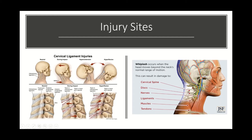Here on the picture on the right, it lists off everything that can be damaged in a whiplash injury. We have the cervical spine with multiple joints and bone that can be damaged, the discs in between the vertebrae, the nerves that can have a compression or stretching type injury, and ligaments, muscles, and tendons. We want to look at all of these different structures when doing an exam on someone who has had a whiplash injury to see what structures are damaged and where we need to start from a rehab standpoint.